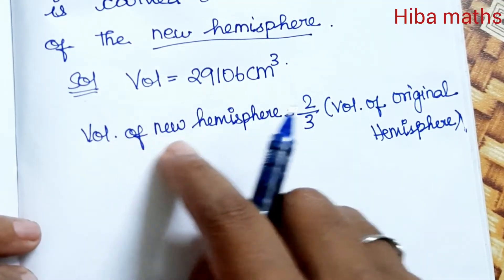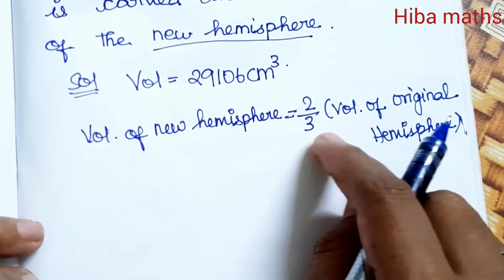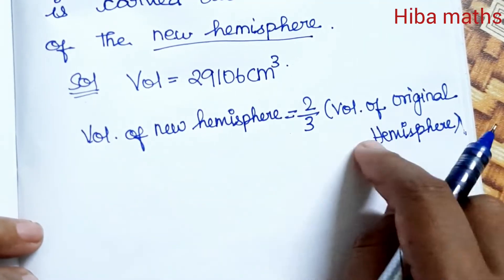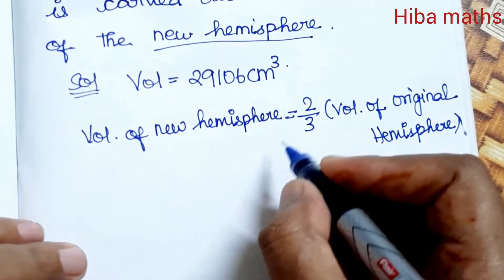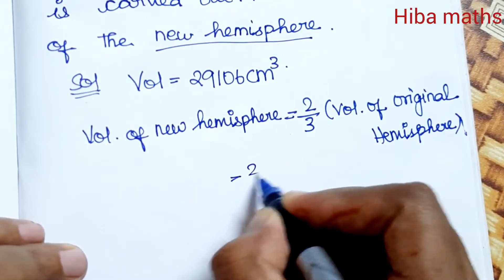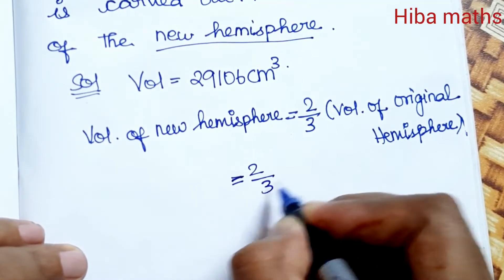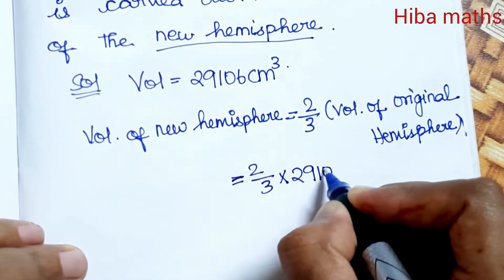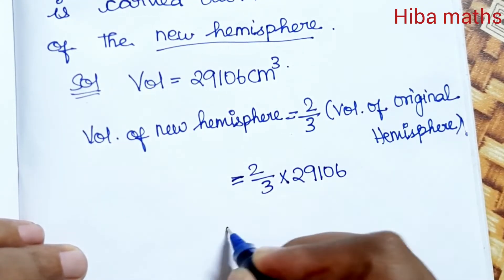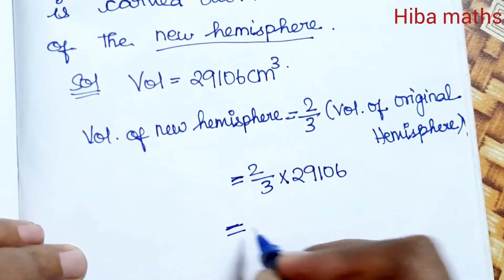The volume of the new hemisphere is 2/3 into 29106. Now we divide it: 2/3 × 29106.